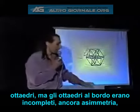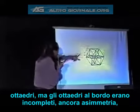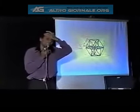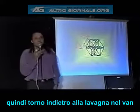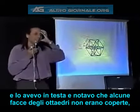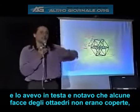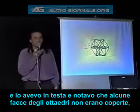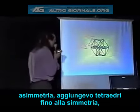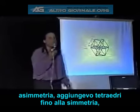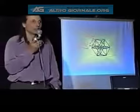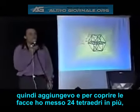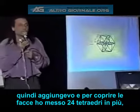The edge octahedrons were incomplete, so I still had asymmetry. I went back to the drawing board in my van, noticing that some of the faces of the octahedrons were not covered. So I decided I had to keep adding tetrahedrons until I gained symmetry. I kept adding tetrahedrons, and to cover all of the faces, I had to add 24 tetrahedrons to the ones that were already there.